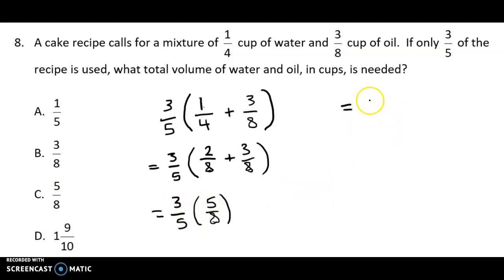So we have 3 times 5, which is 15, and 5 times 8, which is 40. Now both of these numbers are divisible by 5. Doing that division, we get 3 on top and 8 on the bottom.